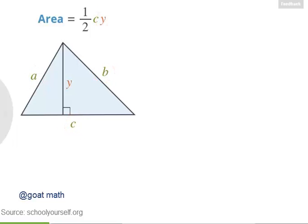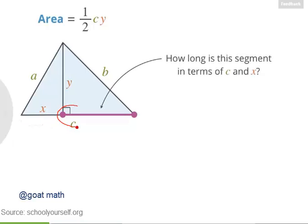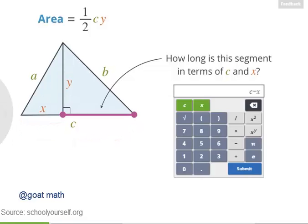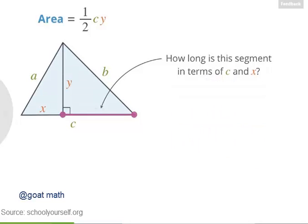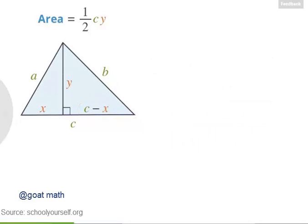So if we can find a way to express this triangle's height y in terms of the side lengths a, b, and c, then we should get Heron's formula. Let's say this segment between the altitude and this corner has length x. So then this other segment has length c minus x, in terms of c, the length of the entire base, and x.